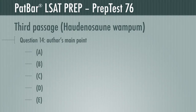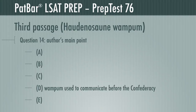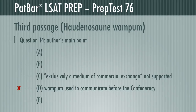Question 14 wants the most accurate expression of the author's main point. There is one response we can dispatch immediately. It's clear, starting in paragraph 2, that wampum began as a means of communication well before the Haudenosaunee Confederacy — so D cannot be correct. The passage never says that wampum was exclusively for commercial exchange following European contact. Its significance was changed, certainly, but exclusively? The passage does not support that. C is incorrect.